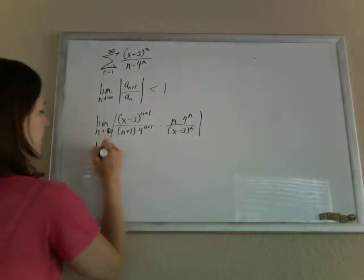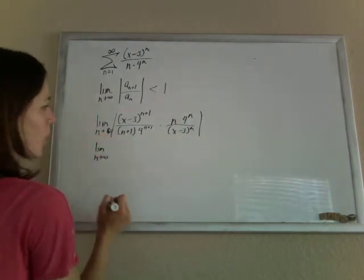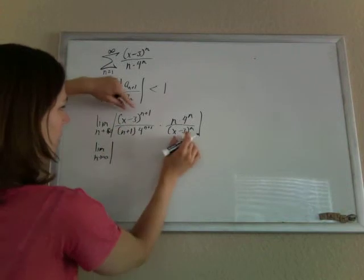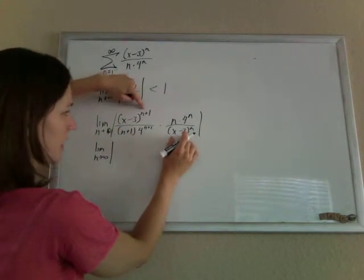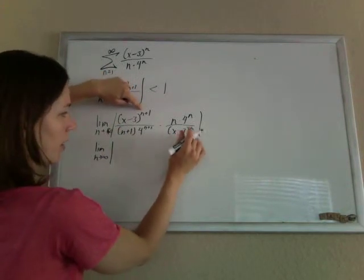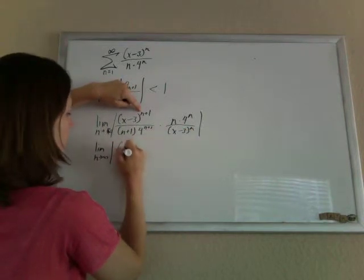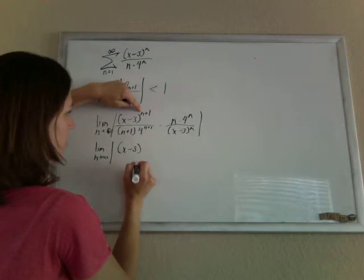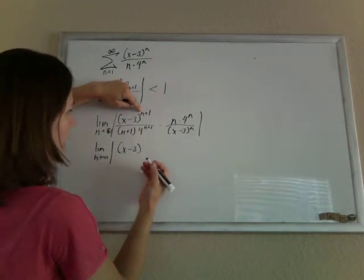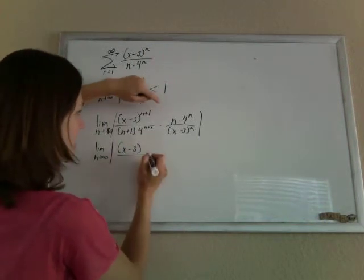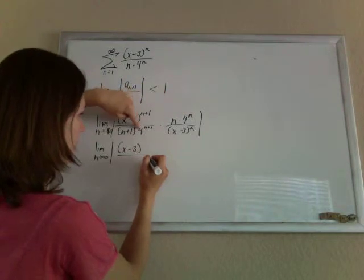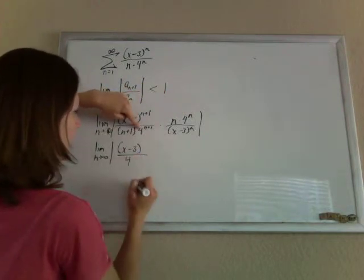Let's clean it up. So what we're going to have is if I've got an x minus 3 to the n plus 1 up here, and to the n down there, you can subtract those exponents. We'll just give you x minus 3 to the 1. Let's see, same idea. I've got a 4 to the n and a 4 to the n plus 1 down there. I'll leave you a 4 on the bottom.